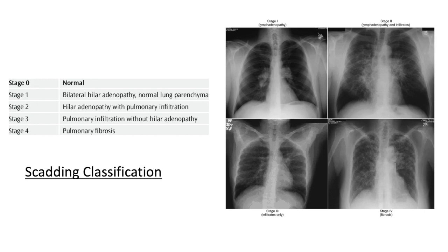The Scadding classification illustrated: Stage 1 shows bilateral hilar lymphadenopathy front and center with normal lung parenchyma. Stage 2 shows hilar lymphadenopathy with pulmonary infiltrates.